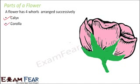The next whorl is the corolla, which is made up of the petals. The petals are also arranged in a circular fashion. Even in a flower like a rose, you can see it is like concentric circles — the petals are arranged in this fashion.